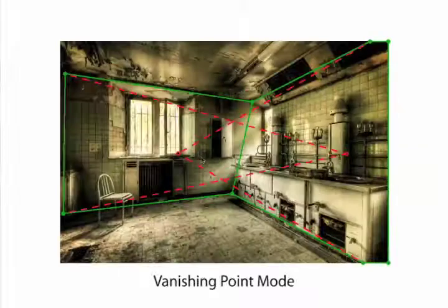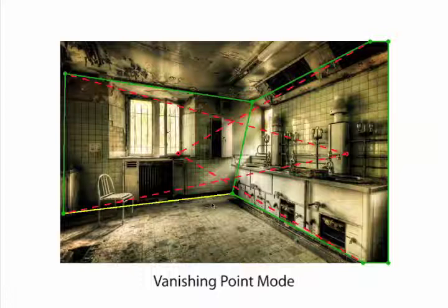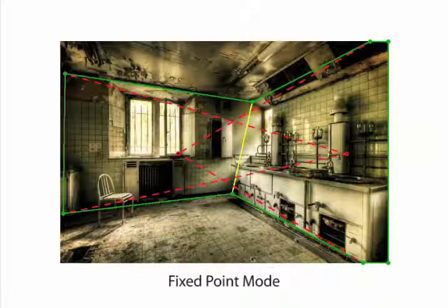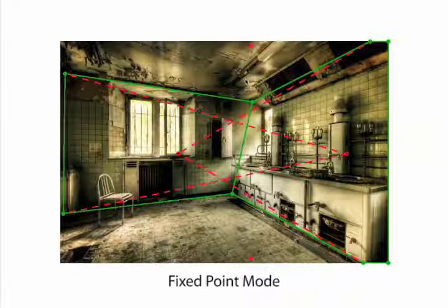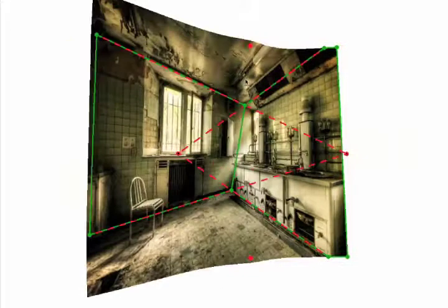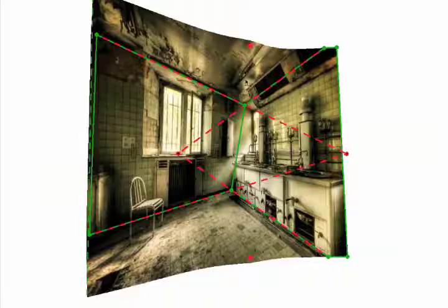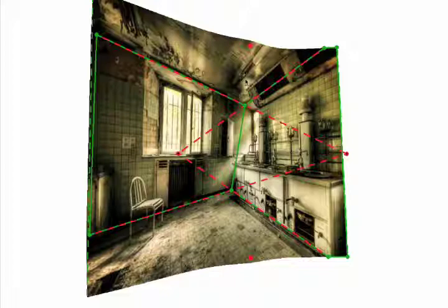We zoom back in and pin a couple of spots in the image with fixed point constraints, which prevents the entire mesh from scaling down to a single point. We run the optimization and get a result, but the left and right boundaries moved more than we'd like, so we constrain them not to move horizontally with the border constraint, and run the optimization once more.